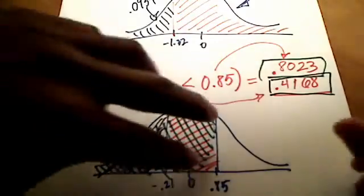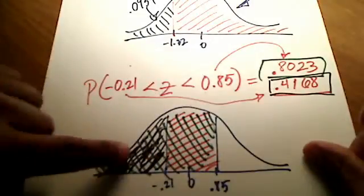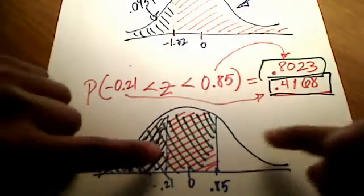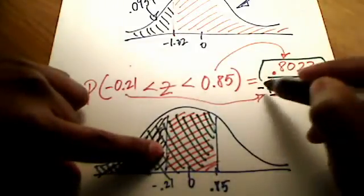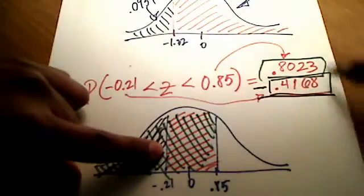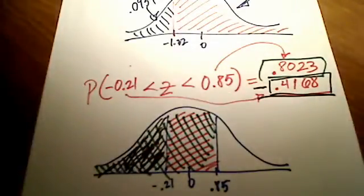So what I'm doing is I'm going to take all of this green stuff, take away this black stuff here, and I'm left with what I shaded originally, which was in red. That's a geometry problem, really. So I'm just going to take the difference of these two numbers, I'm going to subtract them, and what we are left with is the total area in between those two z numbers.